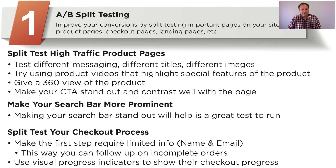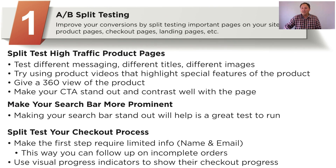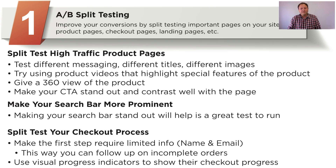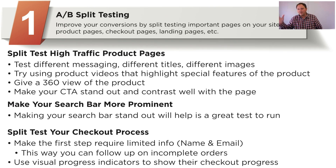Split test your checkout process — this is a very important part. If you don't make it easy, you're going to lose people here. I would start by making the first step only require limited info like first name, last name, and email, and then moving them to step two. This way, if they abandon the checkout process at step two or further, then you can follow up with these people on incomplete orders. Use visual process indicators to show their checkout progress — if there are four steps in the checkout process, make these four steps visual and show their progress through them.